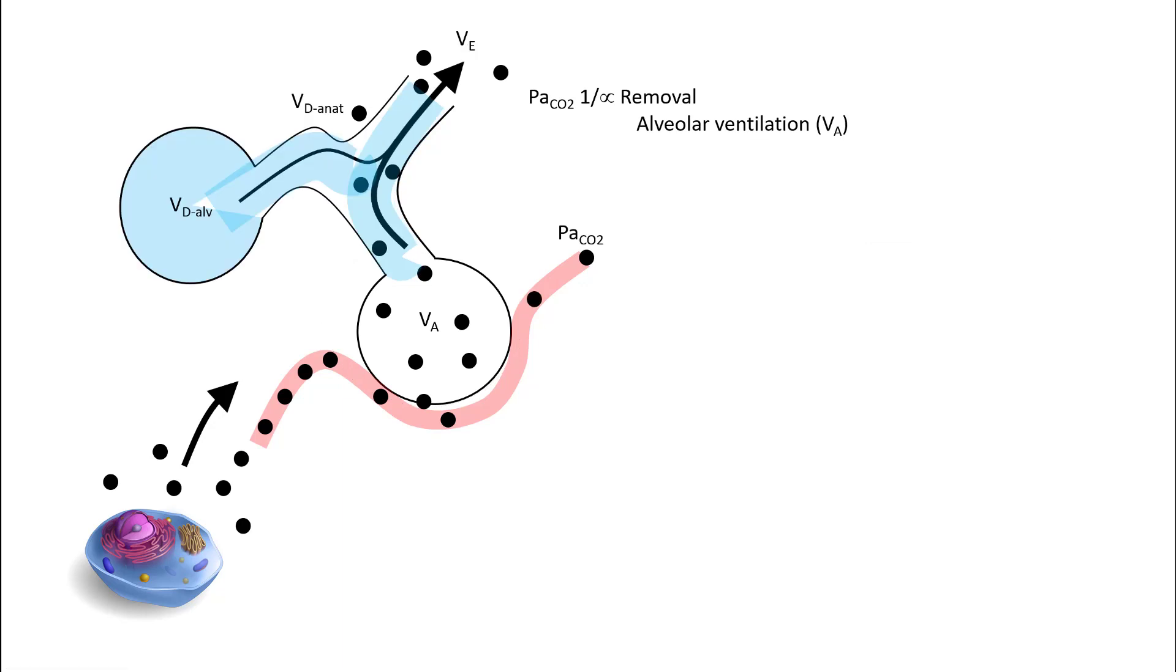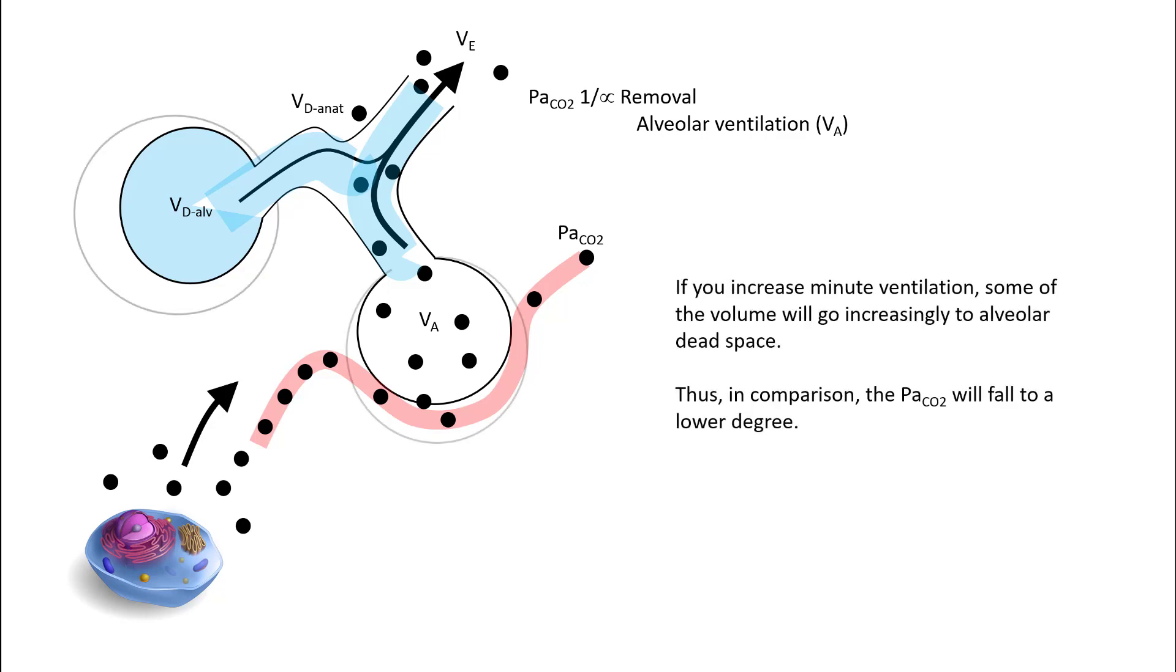Things become a little bit more complicated when you have alveolar dead space alongside. In this case, when you increase the minute ventilation, some of the volume will go towards increasing the alveolar dead space as well. So in effect, even if you have increased the minute ventilation, your alveolar ventilation doesn't increase at the same rate. So your PaCO2 will fall to a lower degree.